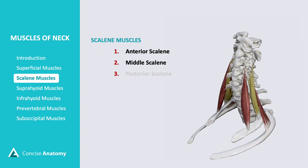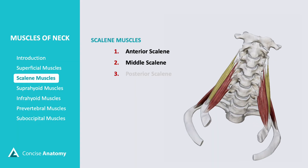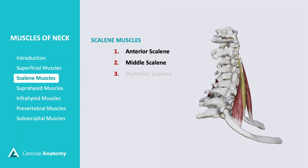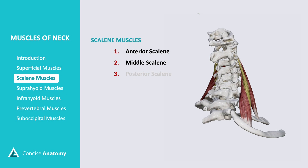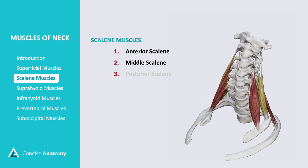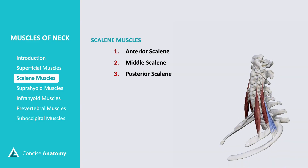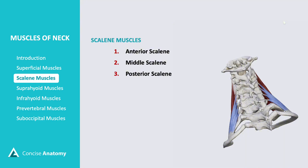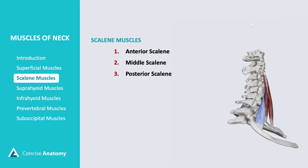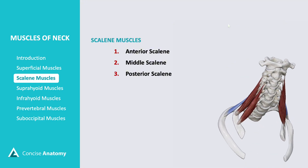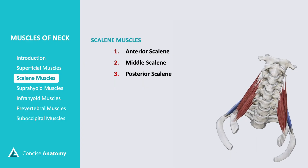The middle scalene muscle, the largest of the three, extends from the cervical spine to the first rib. It helps in lateral neck flexion and also aids in elevating the first rib for breathing. The posterior scalene muscle, the smallest and most posterior, attaches to the second rib. It contributes to lateral neck flexion and assists in elevating the second rib during forced inspiration.